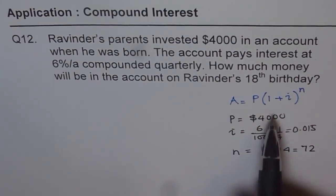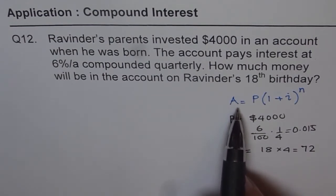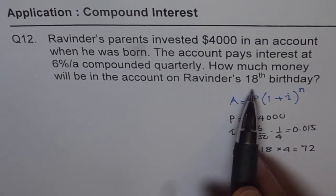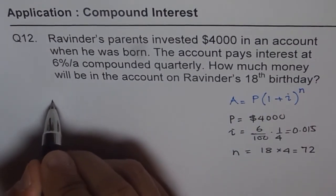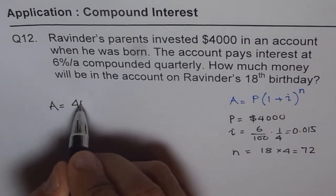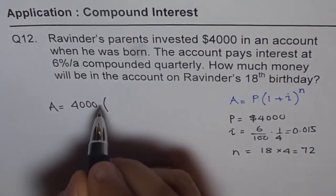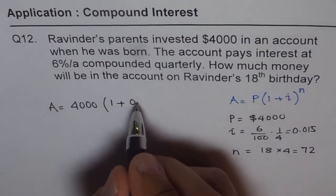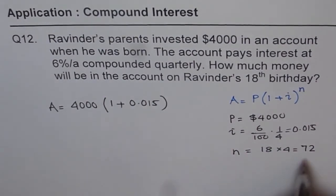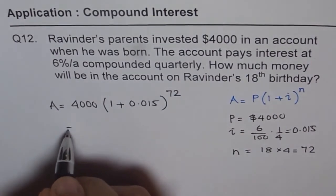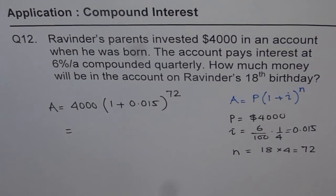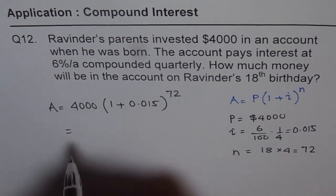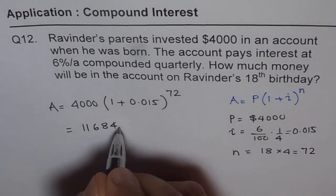We know all these values. When we substitute these we can find the maturity amount, the amount which will be available on the 18th birthday. So A equals 4000 times 1 plus 0.015 to the power of 72. Using a calculator: 4000 times (1.015)^72 equals 11,684.63.